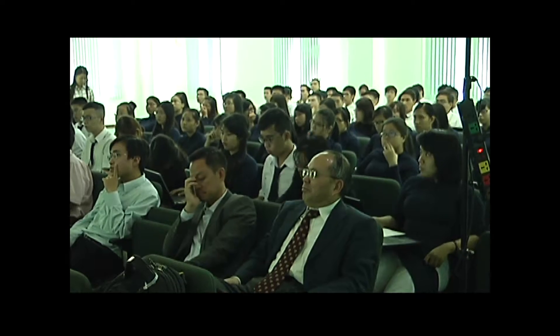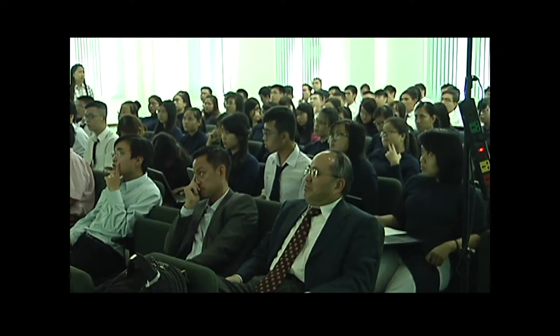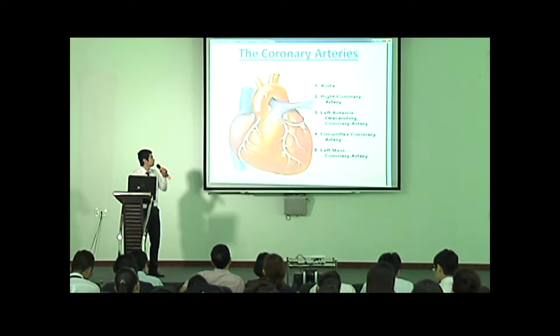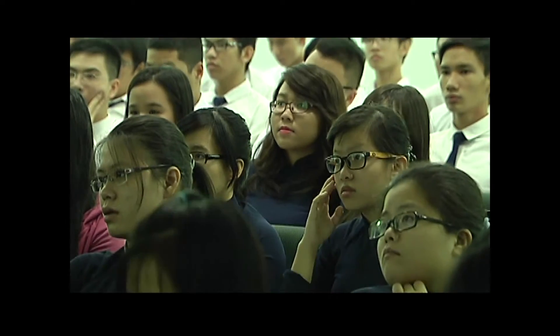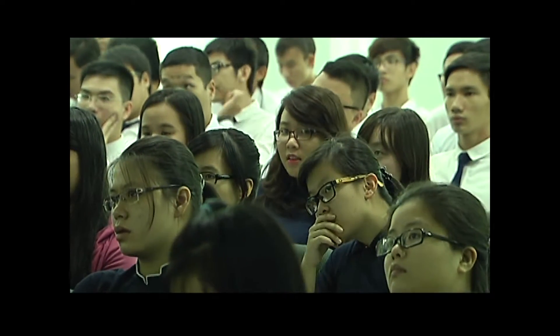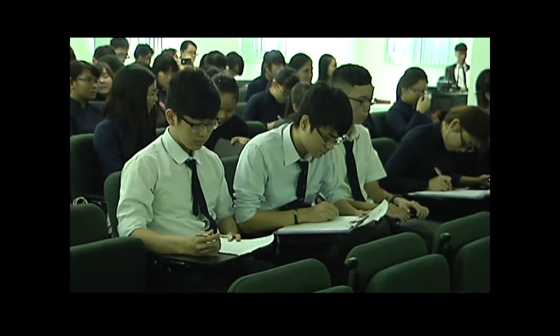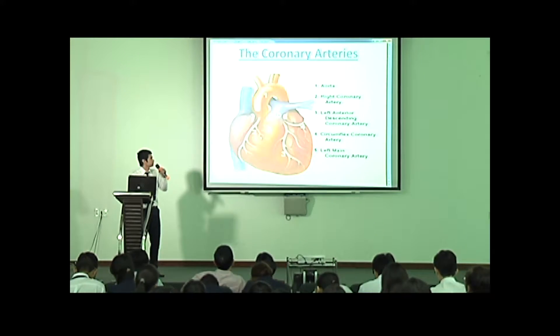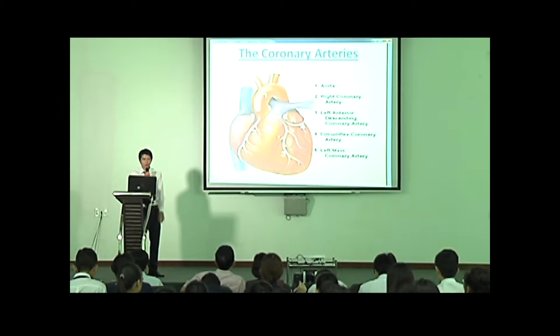The left anterior descending artery supplies 45% to 55% of the left coronary artery territory. The right coronary artery supplies blood to the right side of the heart. The RCA supplies 25 to 35% of the left ventricular myocardium. Thank you for listening.